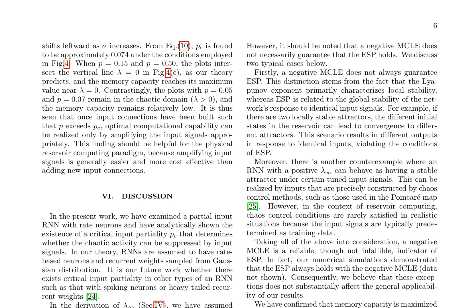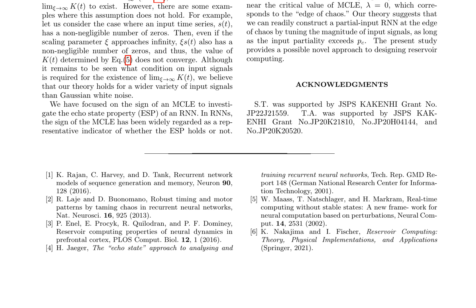The analysis is based on several assumptions, including the existence of lim_{ξ→∞} k(t), acknowledging that there are examples where this assumption does not hold. The theory is believed to hold for a wider variety of input signals than Gaussian white noise. The authors also mentioned two typical cases where a negative MCLE does not guarantee ESP, primarily due to local stability and global stability considerations. However, numerical simulations demonstrated that ESP always holds with a negative MCLE. The results are considered useful for designing reservoir computing systems and provide a possible novel approach to this field.